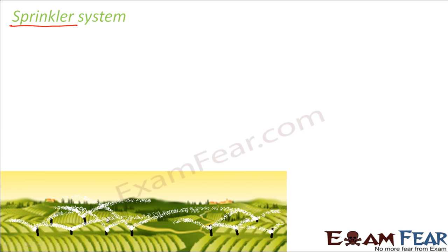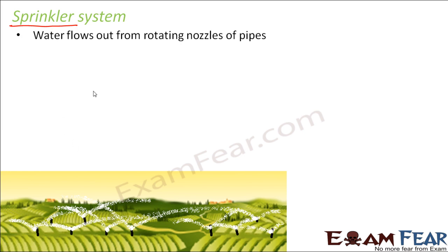As you can see in this picture, this is how water gets sprinkled in this type of system. This is your entire field, and here you see these white dots — they represent the water coming out of these small pipe-like structures. The water gets sprinkled out, and these structures are established at a particular distance from each other. Water flows out from rotating nozzles of pipes. The nozzle keeps rotating, so all the area surrounding it receives water because it is rotating in a circular path.